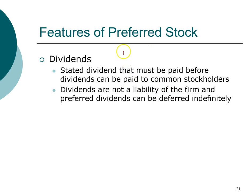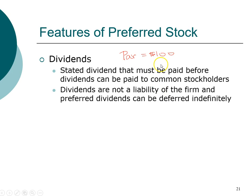Often a preferred stock will have a par value of one hundred dollars, and the dividend is expressed as a percentage. So if this is a four percent preferred stock, the dividend will be four percent of one hundred dollars — in other words, four dollars. In that regard, preferred stock is a lot like a bond. However, since there's no ending date to preferred stock, that four dollar dividend will last forever — so preferred stock is essentially a perpetuity with a constant dividend.